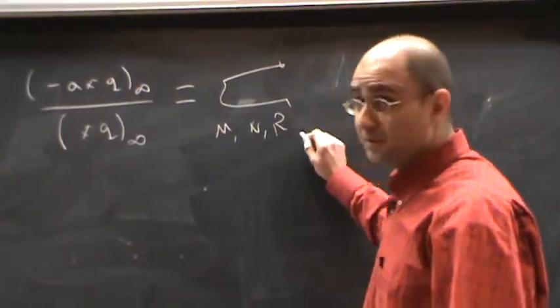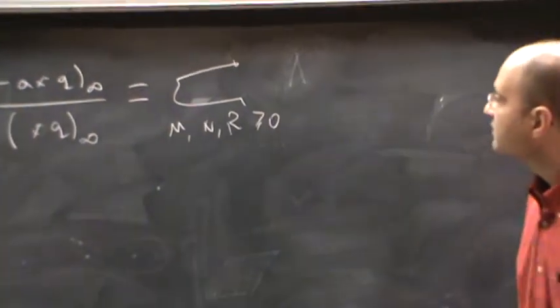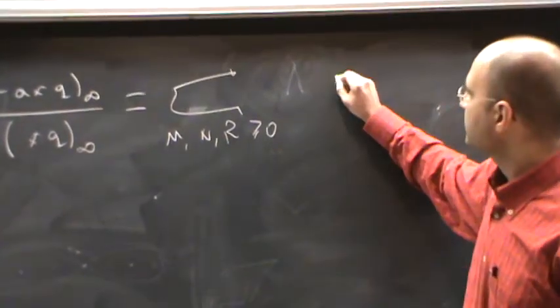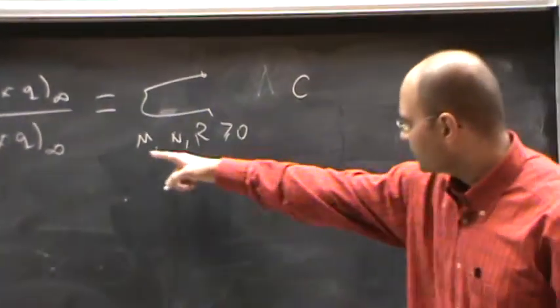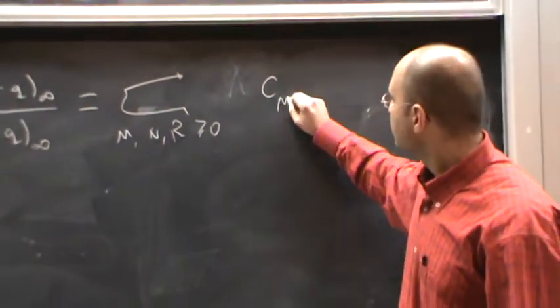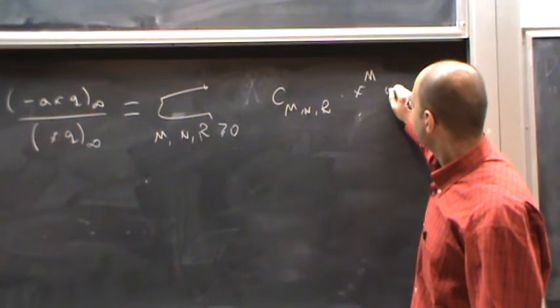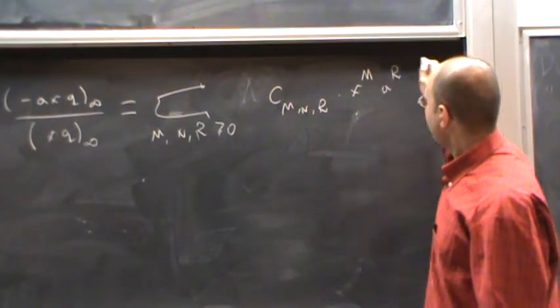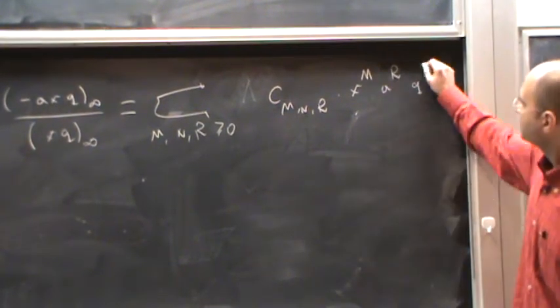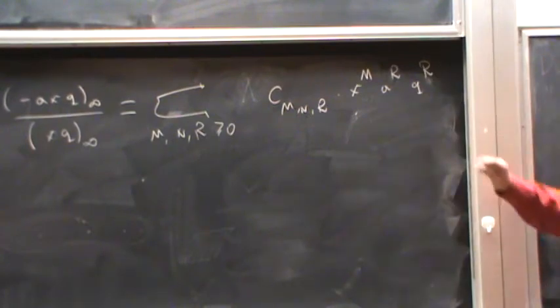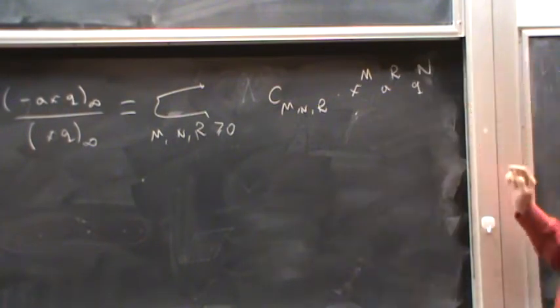We will regard these series. It's easy to argue that we have a triple sum here. Let's say over capital M, capital M, capital R, or greater than or equal to 0. Some coefficient that depends on these indices times x to m, a to r, and the exponent q to n.